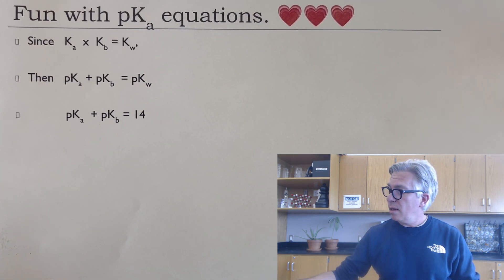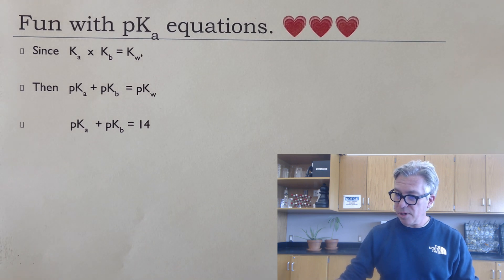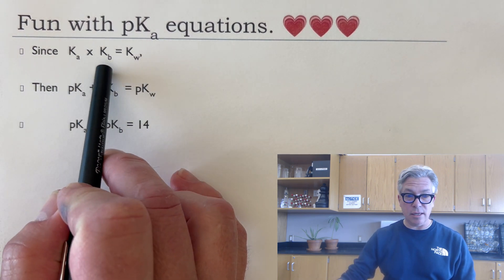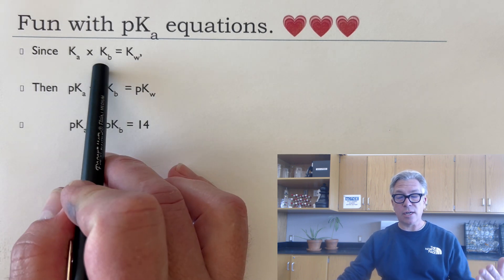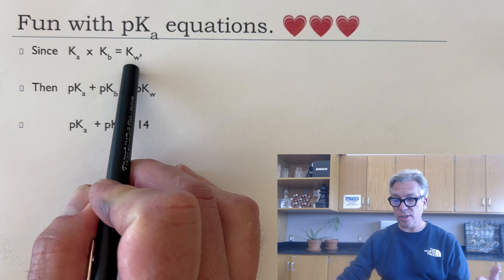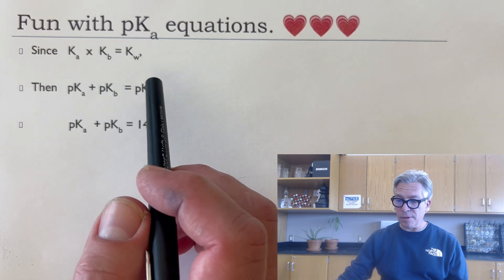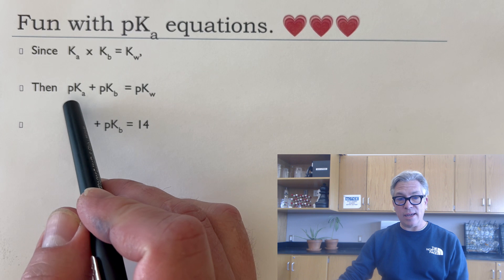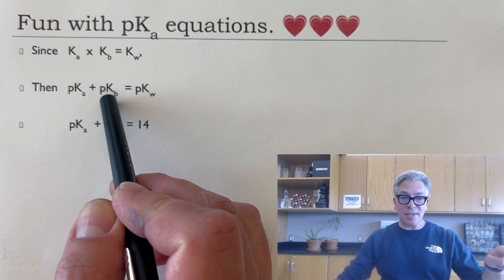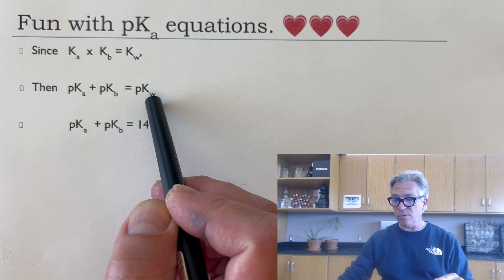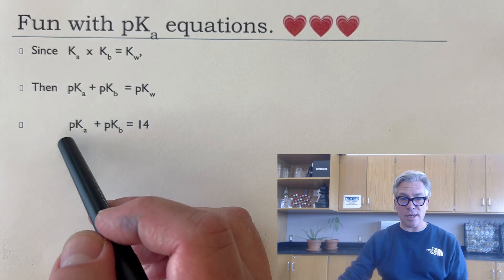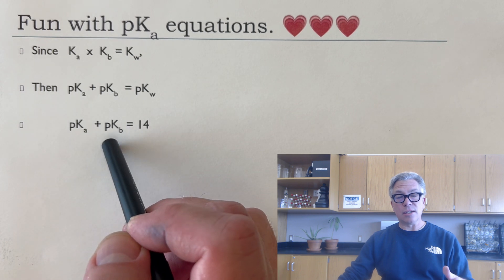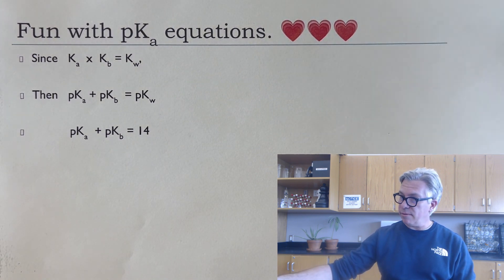And just for fun, because I like to have fun with pKa equations, we've already been experiencing the fact that Ka times Kb equals Kw. So the Ka for an acid times Kb for its conjugate equals Kw for water. So that's kind of nice. Well, what if we take the negative log of everything there? We get an equation where the pKa plus the pKb for its conjugate actually equal pKw, which is 14. So that's kind of a lot of fun. So if you know pKa, you can find the pKb for its conjugate and vice versa. So make a note of that.